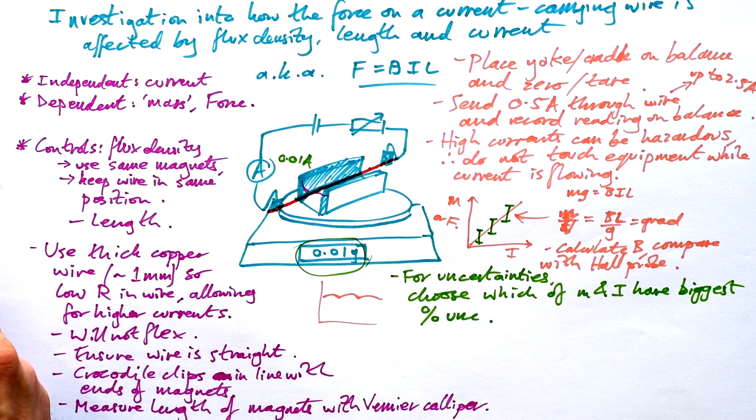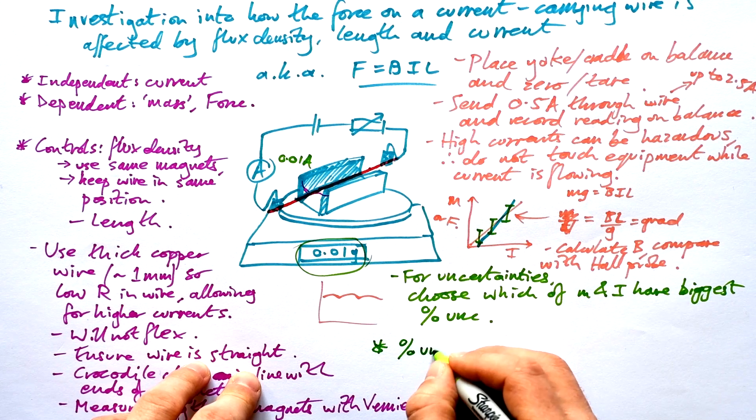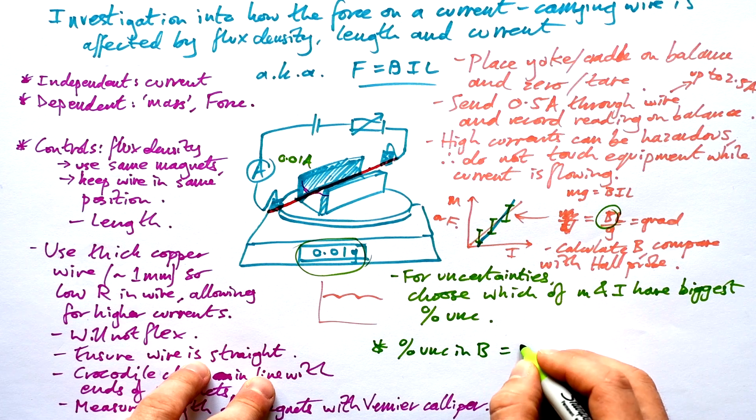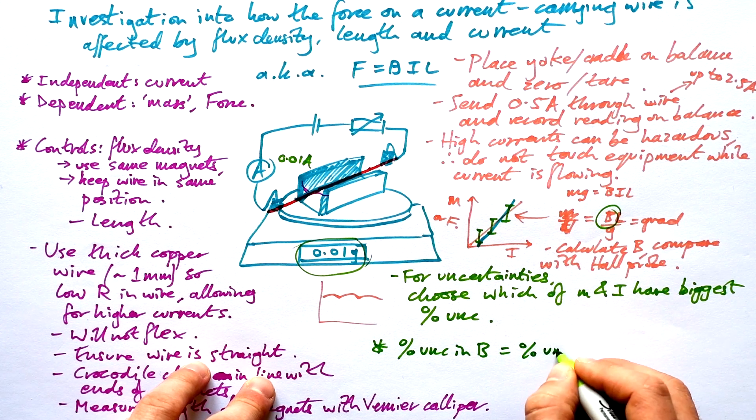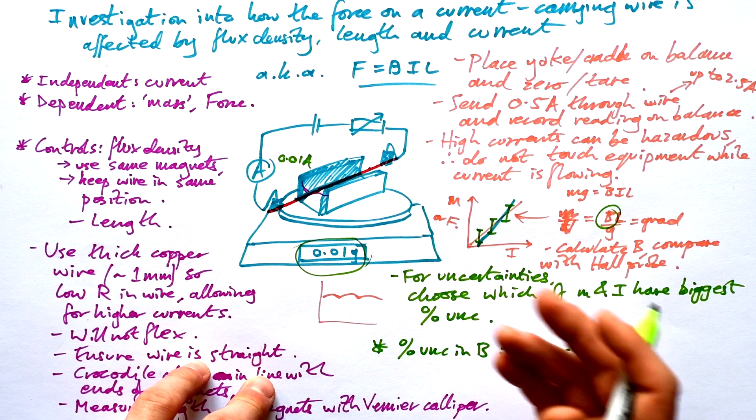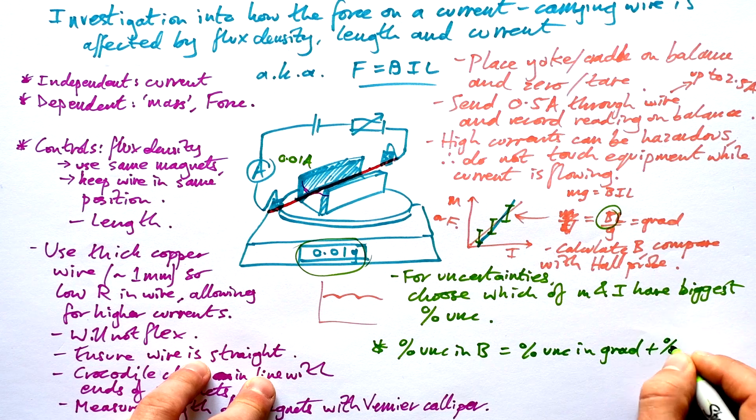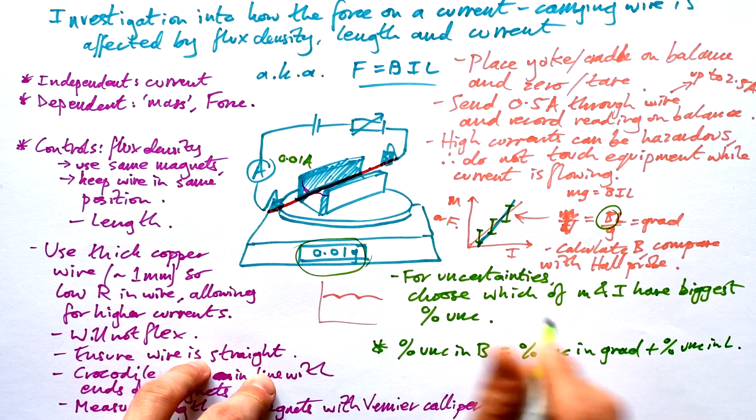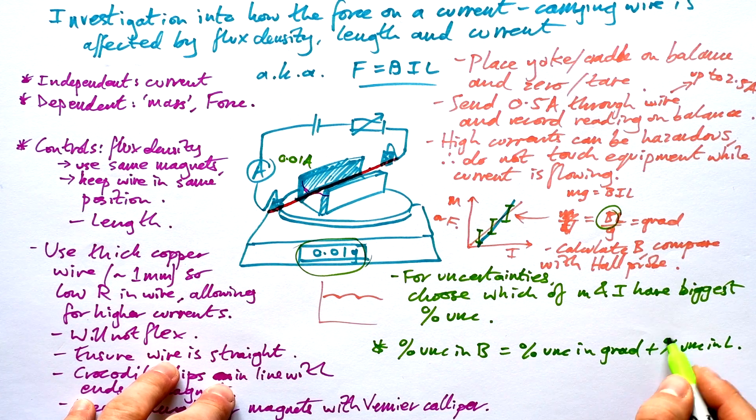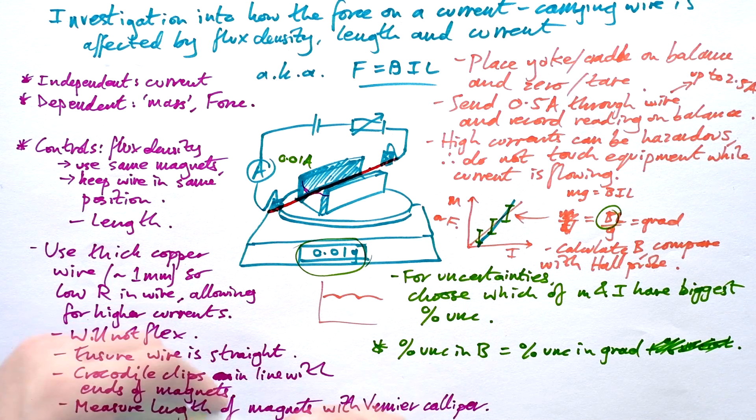You're going to draw error bars. You're going to do a line of worst fit and so we can say in the end percentage uncertainty in B if we're calculating flux density is going to be equal to percentage uncertainty in the gradient. That's line of worst fit take away line of best fit divided by line of best fit times 100. And we're going to add that to any percentage uncertainty in the length depending on how you measured it. It's probably not going to be much so you don't really have to mention that. You can just say that it's negligible.